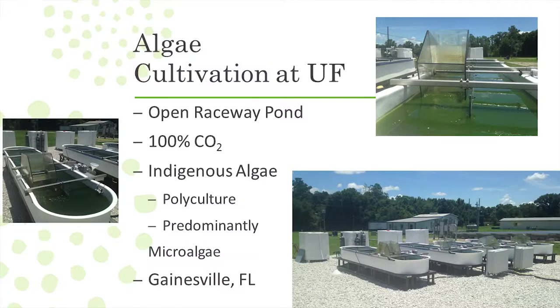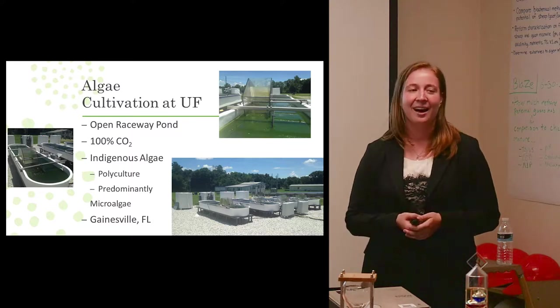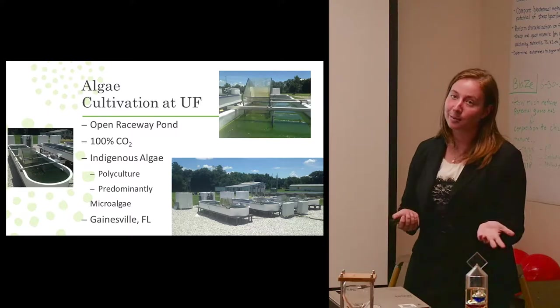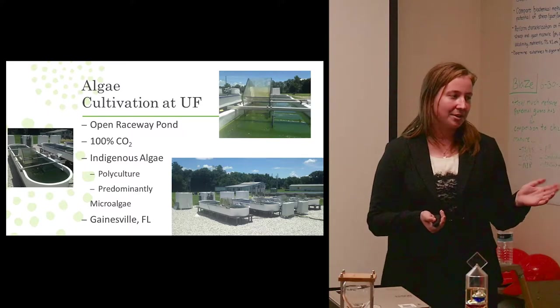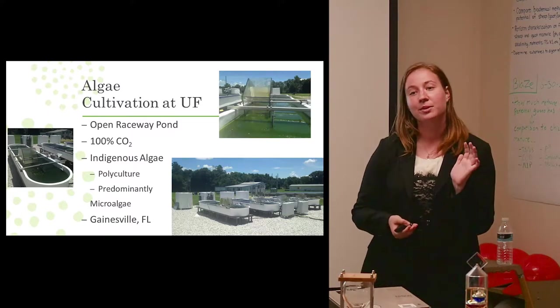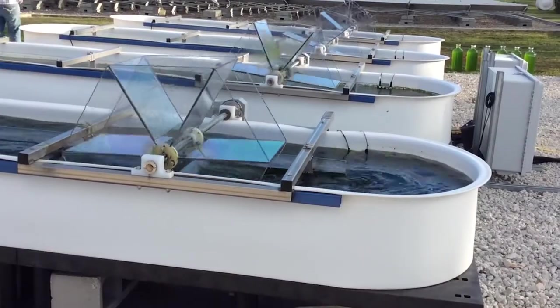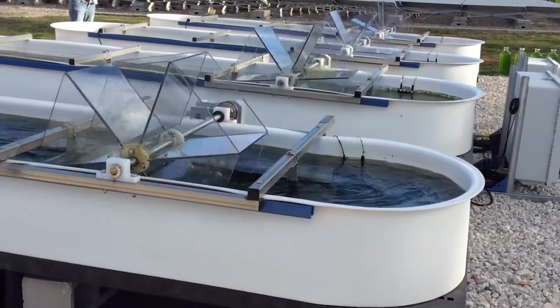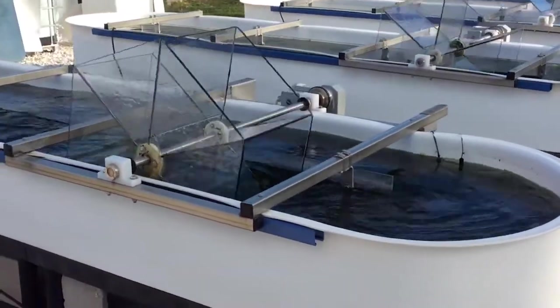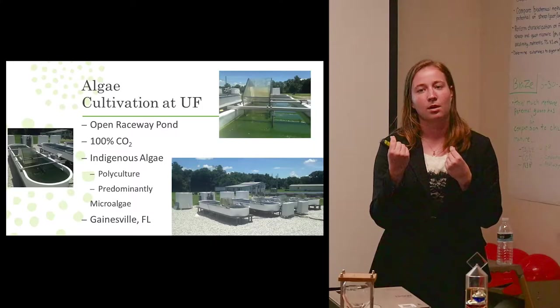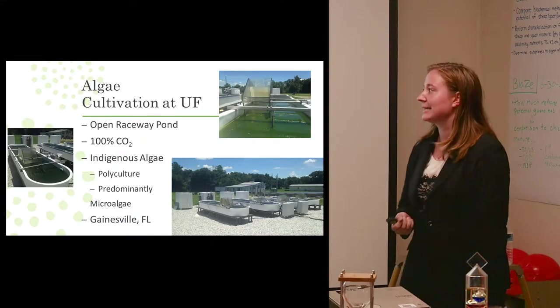So here at UF, we are cultivating algae. Big surprise, I'm sure. We have more raceway ponds as we saw out in the back. And what we have is an open raceway pond grown off of 100% CO2. Erica described this briefly. We have the paddle wheels on the raceway ponds that help to continuously mix the algae to make sure that we are really at peak efficiency for creating as much biomass and exposing a large amount of biomass to the sun and just photosynthesizing.